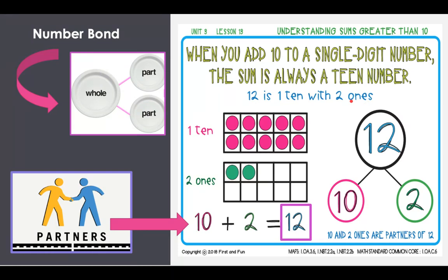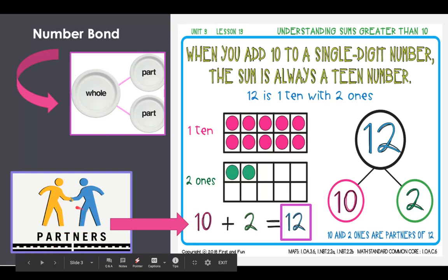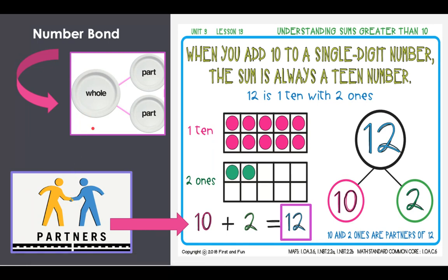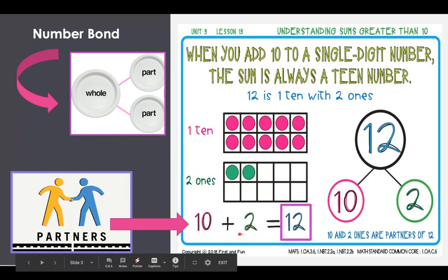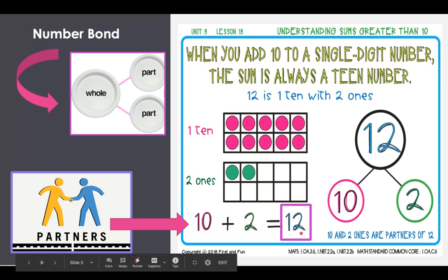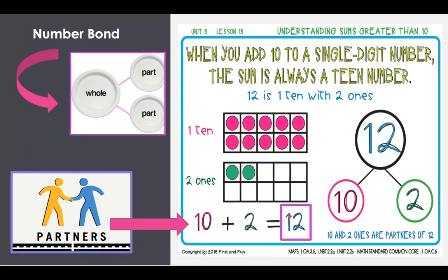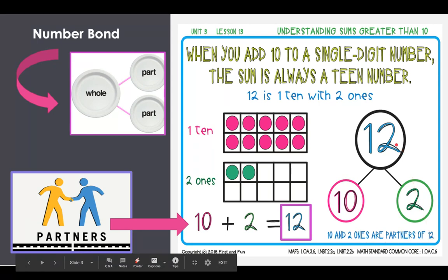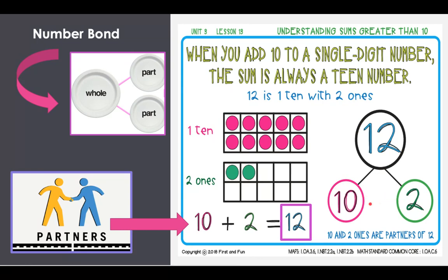When you add 10 to a single digit number, boys and girls, the sum is always a teen number. A number bond looks like this — it's a whole number with two parts, called partners, that work together to create the whole number. When I add a 10 and a single digit number (any number between 1 and 9), I'm going to get a teen number. So 10 and 2 are partners of 12; 12 is the whole. I can also use my 10-frame, fill it up with one 10, and put my extra ones in my second 10-frame.